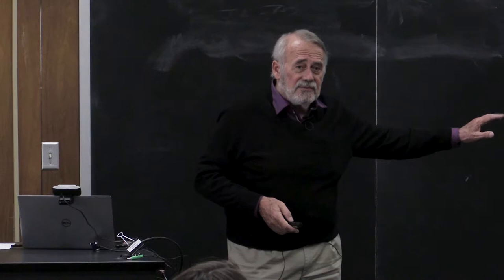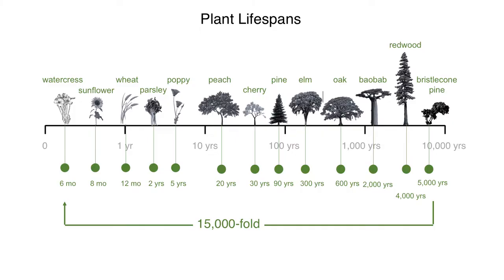For plant lifespans, moving up the scale: short-lived annuals, then a peach tree around ten years, a baobab up to several thousand years, a redwood to 4,000 years, and a bristlecone pine to about 5,000 years — roughly a 15,000-fold difference. With avians, hummingbirds and canaries are the size of a mouse or rat, which would live only one to three years, yet these birds live eight to ten years.